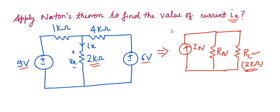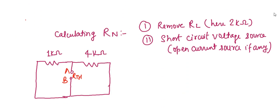In Norton's theorem we have to find first the value of IN and the value of RN — these two things are required. For calculation of RN, the Norton's equivalent resistance, the first step is to remove the RL value. So the 2 kilohm resistance is removed, and then we short circuit the voltage sources. Since this circuit has only voltage sources, those are shorted.